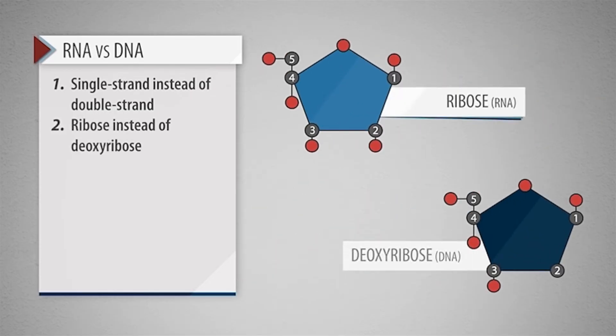Secondly, RNA has a ribose sugar instead of deoxyribose sugar like DNA, which is important for enzymes that distinguish DNA from RNA.